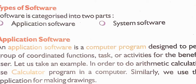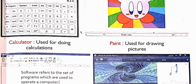On page number 27 you will see some pictures: calculator used for doing calculation, paint used for drawing pictures, and Windows Media Player used for entertainment. Word is used for typing and making corrections in the text.